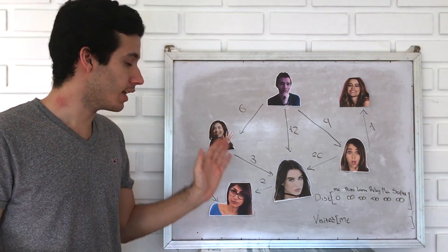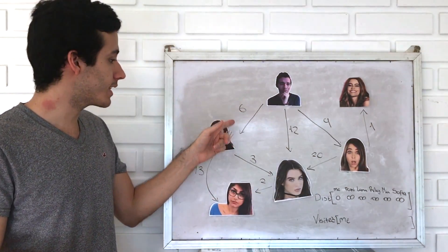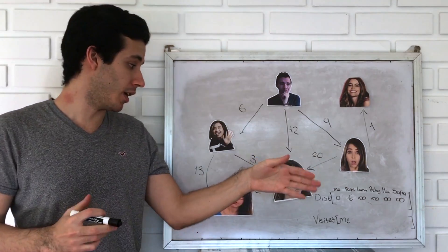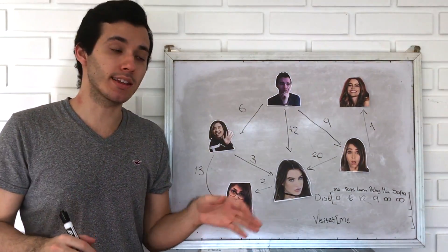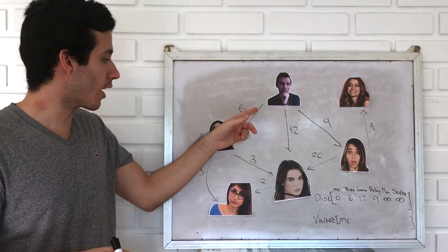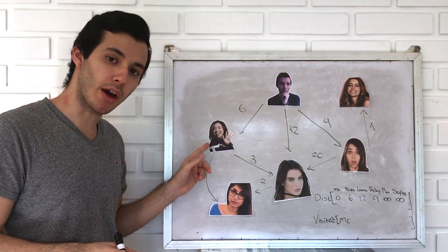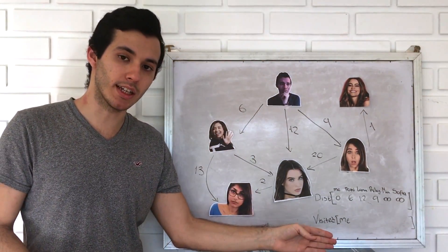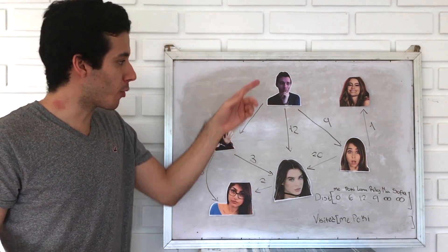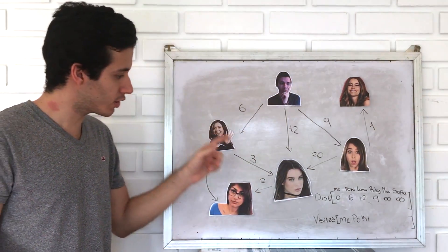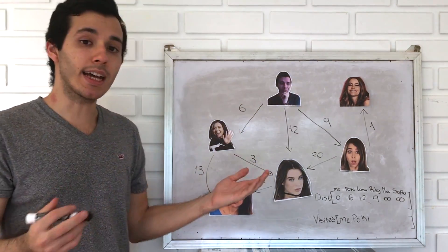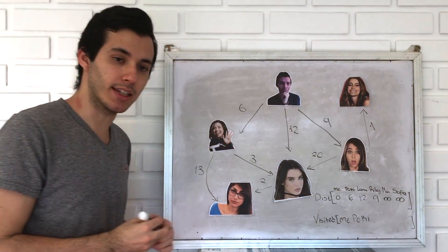Now I need to update the distance set with all of my adjacent houses — that means all of the houses I can reach directly from mine. In this case we have Pokey, Lana, and Riley. So we go: is six less than infinity? Yes, so we update it. We do the same thing with Lana and Riley. Now I need to select the shortest path of all the houses I haven't visited yet, and the shortest path so far belongs to Pokey. So we add Pokey to the visited set and repeat the process with Pokey's adjacent houses. To go from my house to Pokey's and from Pokey's to Lana's, it takes six plus three equals nine. Is that less than twelve? Yes, so we update the set.